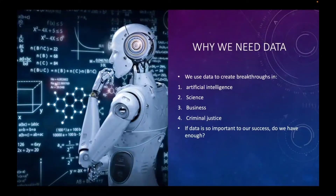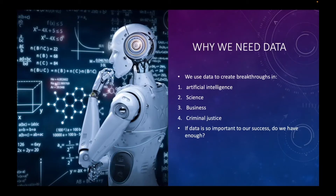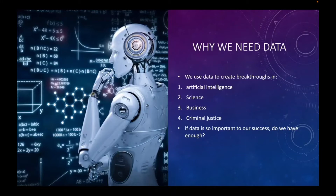We use data to create breakthroughs in artificial intelligence. Most recently, over the last close to two decades, deep learning has become really significant. Machine learning has always been somewhat significant, but deep learning — models that need tons of data — has become really prevalent because we just have a bunch of data floating around. It's relevant in science, astronomy, astrophysics, in business, stock markets, finance, optimization. Criminal justice can use different types of models and data to make better decisions.